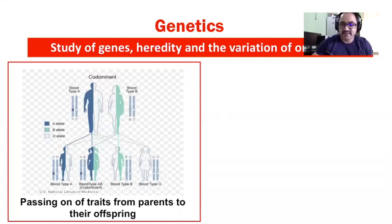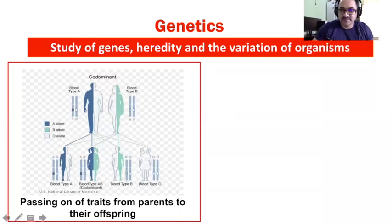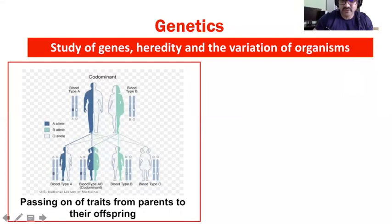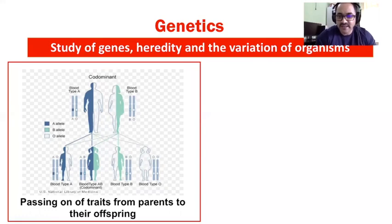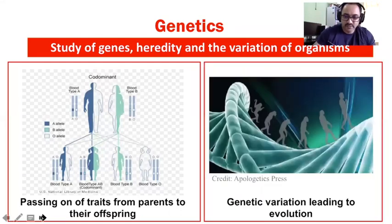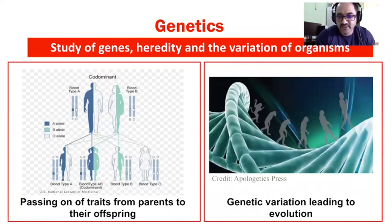As a conventional definition, genetics is basically the study of genes, how they are inherited from one generation to the other, and the variations across different organisms, individuals, or species at different levels of taxonomic hierarchy. And then how this genetic variation leads to evolution — that is another important aspect of studying genetics.